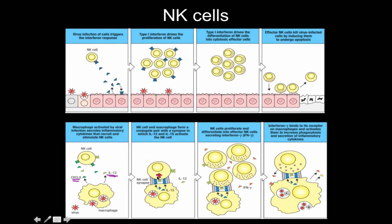Natural killer cells form something called a synapse — a close-contact communication interface — where interleukin-12 and interleukin-15, both produced by macrophages, activate and prime the natural killer cells. Once they proliferate and differentiate, they start secreting interferon gamma, or type 2 interferons. These type 2 interferons bind to macrophages and activate them to produce more inflammatory cytokines, bringing us right back to where we started.